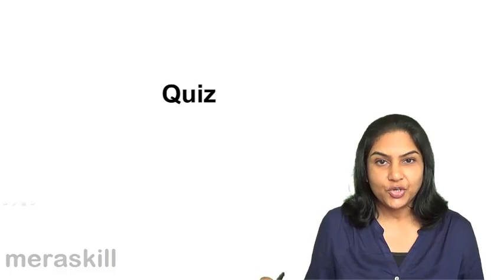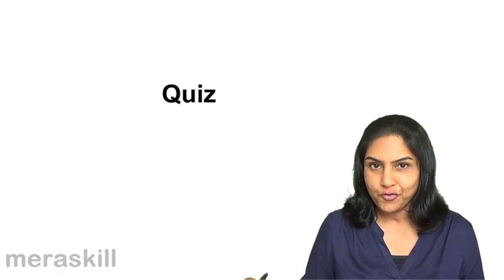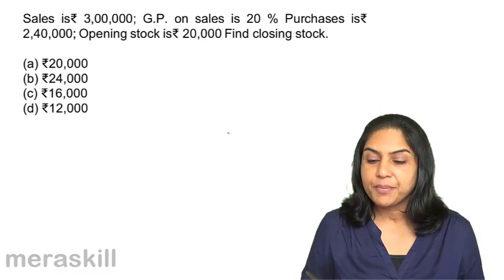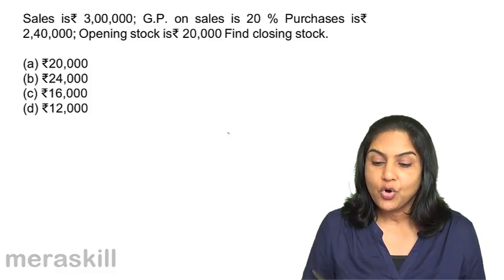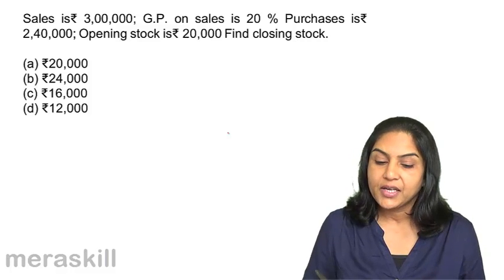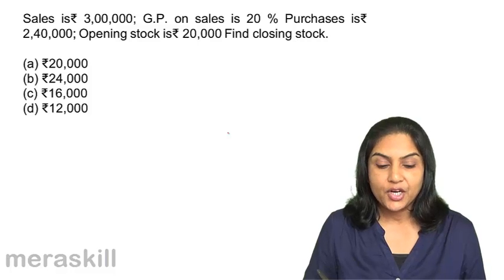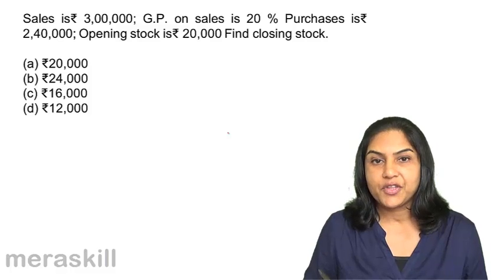Let's take a short quiz to test our understanding so far. Sales is rupees 3 lakh, GP on sales is 20%, purchases is 2 lakh 40,000, opening stock is 20,000. Find closing stock: a) 20,000, b) 24,000, c) 16,000, and d) 12,000.